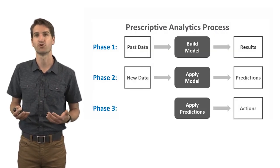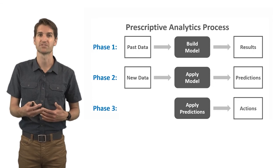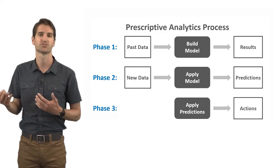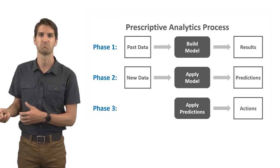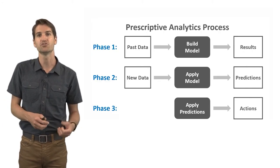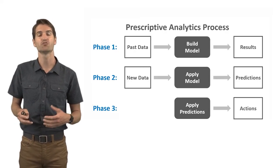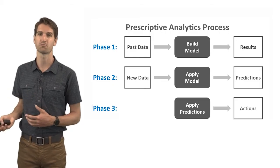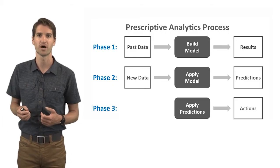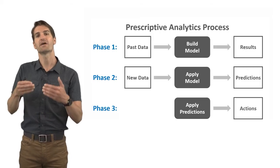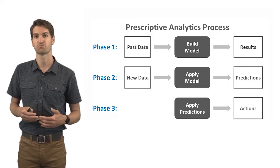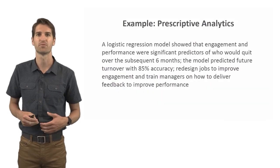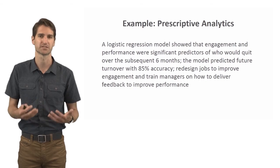The prescriptive analytics process unfolds in three phases. Phase one: past data, build a model, get preliminary results. Phase two: apply that model to new data and assess prediction accuracy. Phase three: take those predictions and come up with a specific course of action. Let's look at a specific example to make this clear.